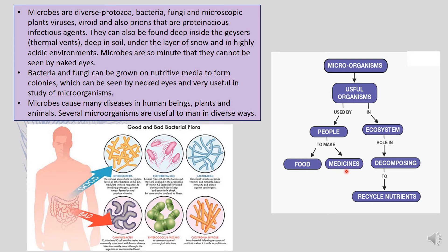We are dependent on microorganisms for food products and medicines. Microbes also help the ecosystem by recycling nutrients through the process of decomposition. They continuously work on dead and decomposed organisms, converting nutrients back into the environment, keeping nutrient cycles going. Elements present on the earth's surface are utilized by producers, transferred through organisms, and returned to the earth with the help of microorganisms.